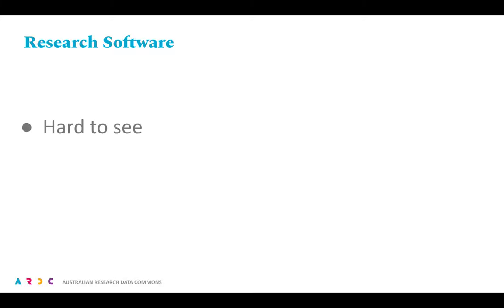Across the literature, three common concerns emerge. Software is hard to see, especially analysis code, which is very often discarded shortly after creation and use. But also for software created with the intention that others will use it, better visibility is still a concern, as well as credit and tracking impact. A common refrain is that for some of the software arising from research, it is poorly put together. There's a lot of reasons and potential solutions to dig into here, but simply put, it's pretty clear we need to better bridge the worlds of research and software engineering.